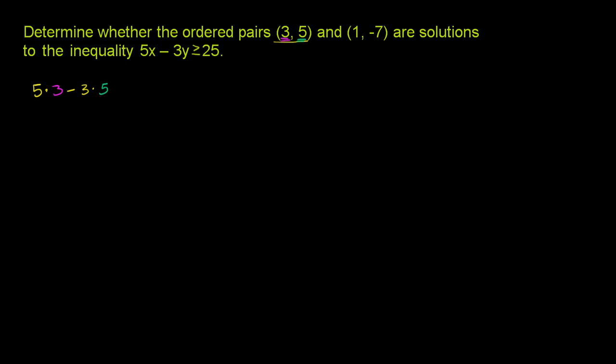Let's see if this is greater than or equal to 25. So 5 times 3 is 15. And then from that, we're going to subtract 15. And let's see if that is greater than or equal to 25. Put that question mark there because we don't know. And 15 minus 15, that is 0.